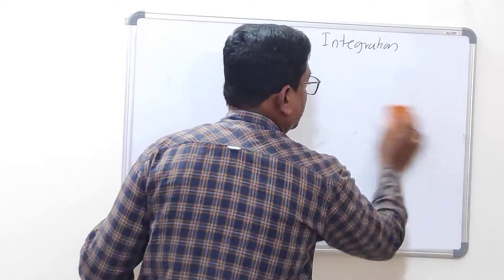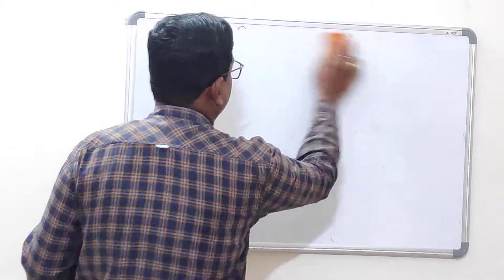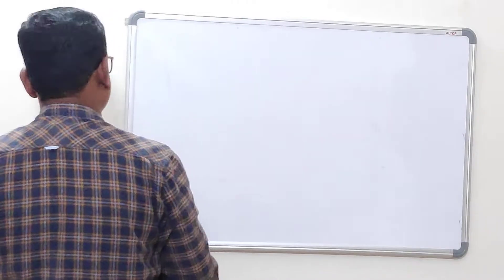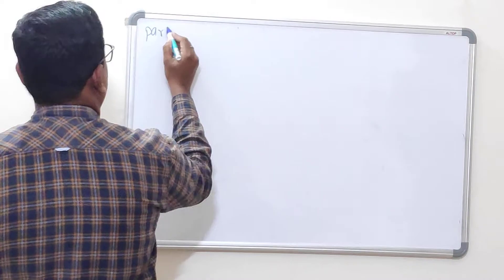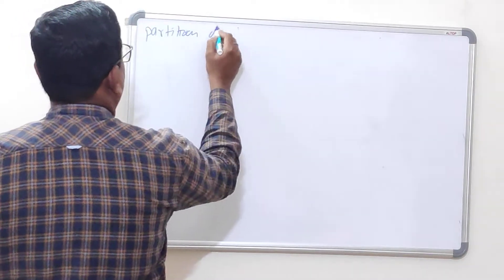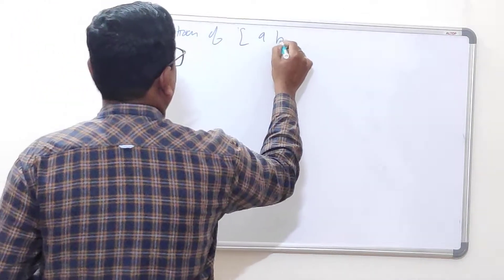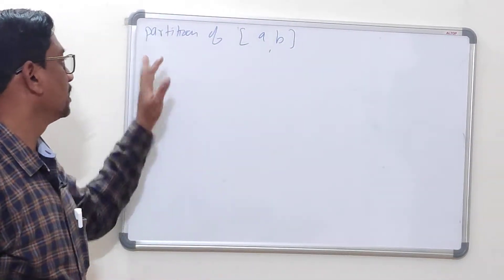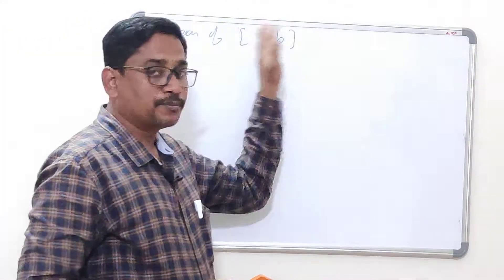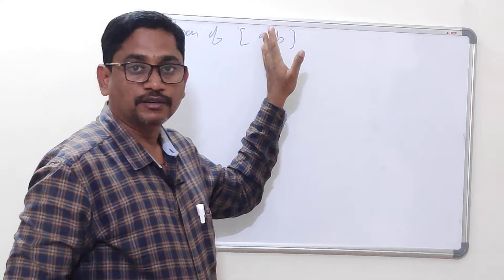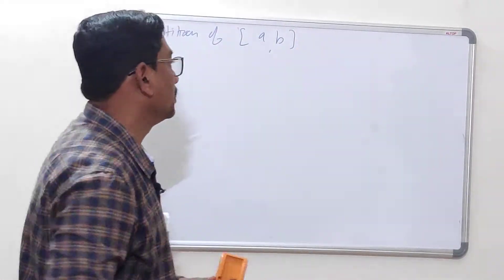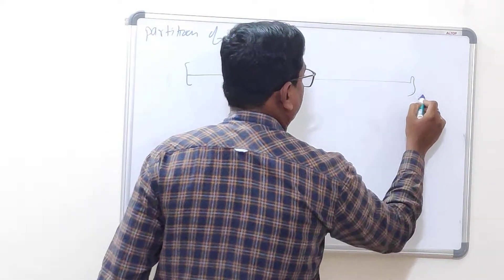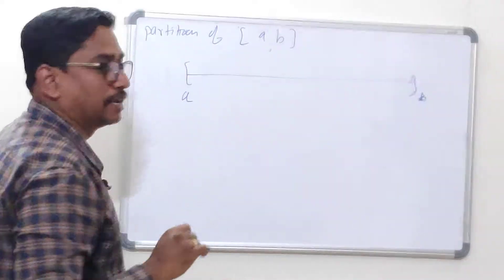Let us define the basic concepts in Riemann integration. The very first is the partition of a closed interval [a, b]. The name itself means you are making parts of the closed interval [a, b] — disjoint parts whose union will again constitute the closed interval [a, b]. Suppose this is your closed interval [a, b], where b is greater than a.